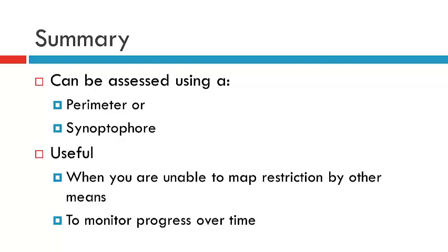In summary, you can use the perimeter or the synoptophore to map the field of uniocular fixation. And whilst it's not used commonly in the clinic, it can be useful when you can't use alternative methods of mapping eye movements, and it can be useful in monitoring the progress of the patient's ductions over time.